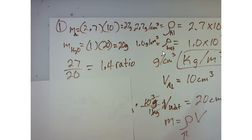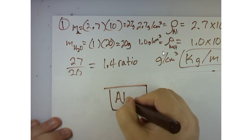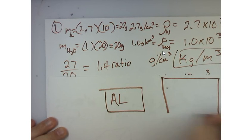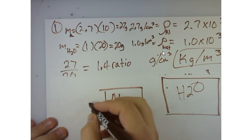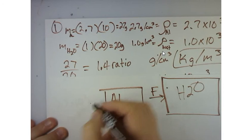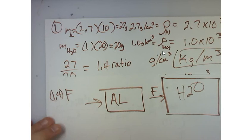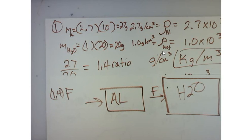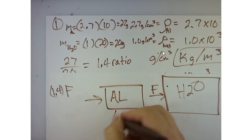Now, what that means is if I have two objects - I have my aluminum, and that's 10 cubic centimeters, and then I have the water, which is a little bit bigger, my H2O - in order to move this, if I apply a force F, in order to move this at the same acceleration, I would have to multiply the force by 1.4. In other words, I'd have to push on this 1.4 times more force than I would for the larger volume of water, because aluminum is more dense.